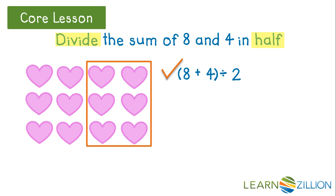Sometimes there's more than one way to write a numerical expression for the same description. For example, we can again add 8 and 4, but this time instead of dividing by 2 we're going to multiply by 1 half. That works because multiplication and division are inverse operations.